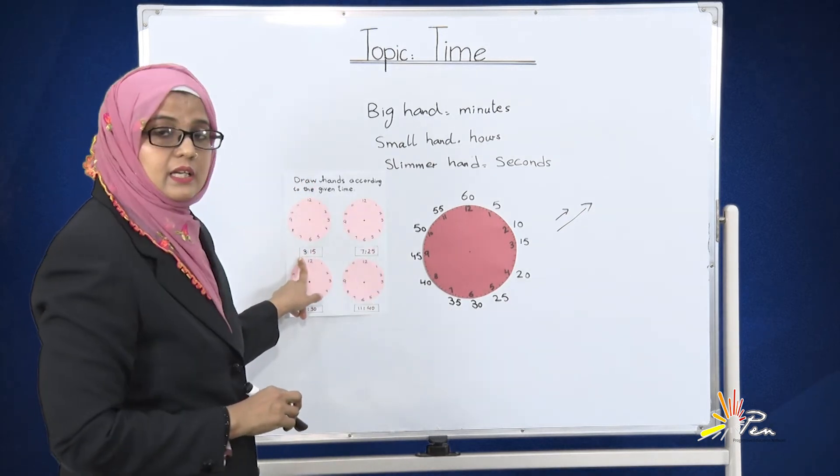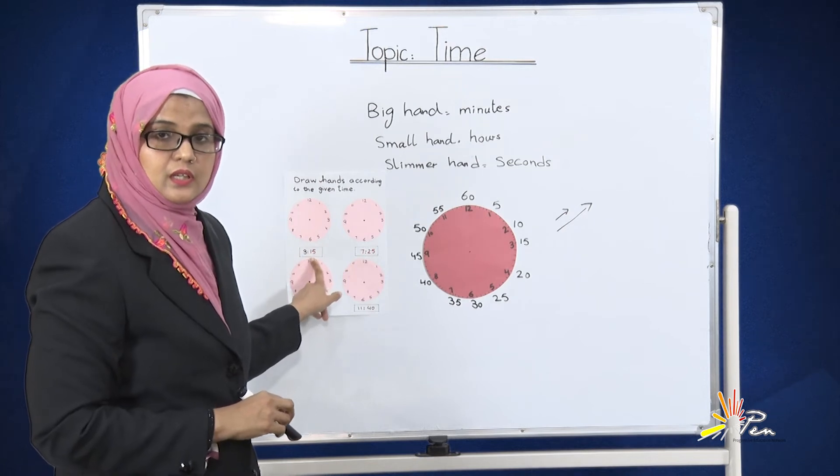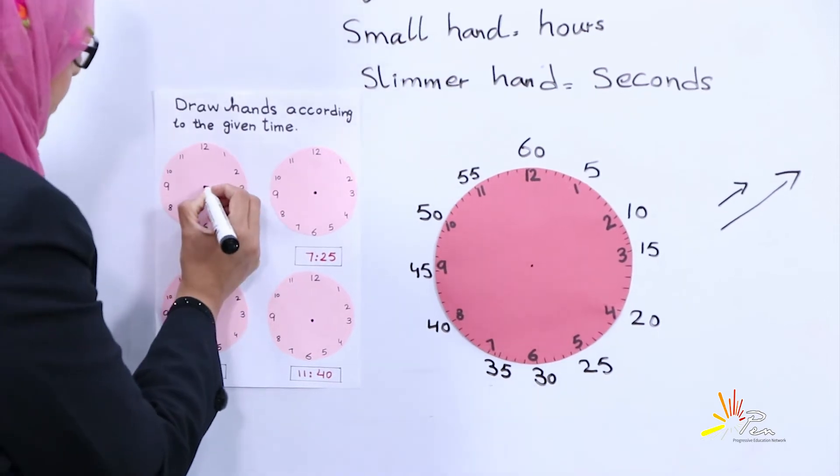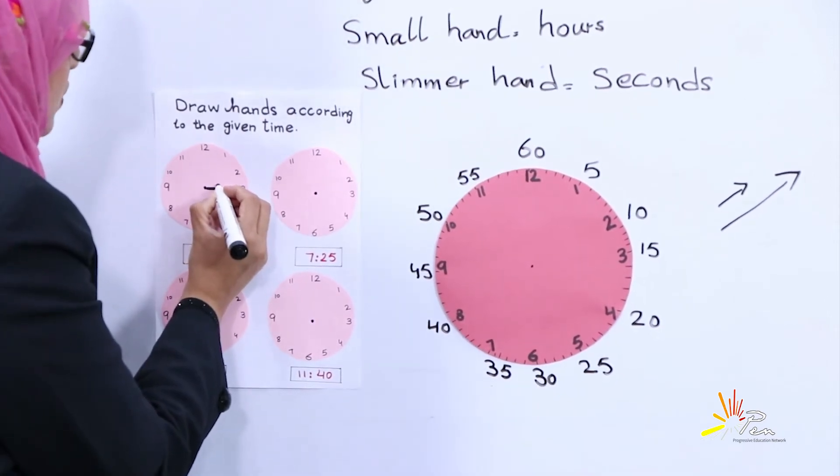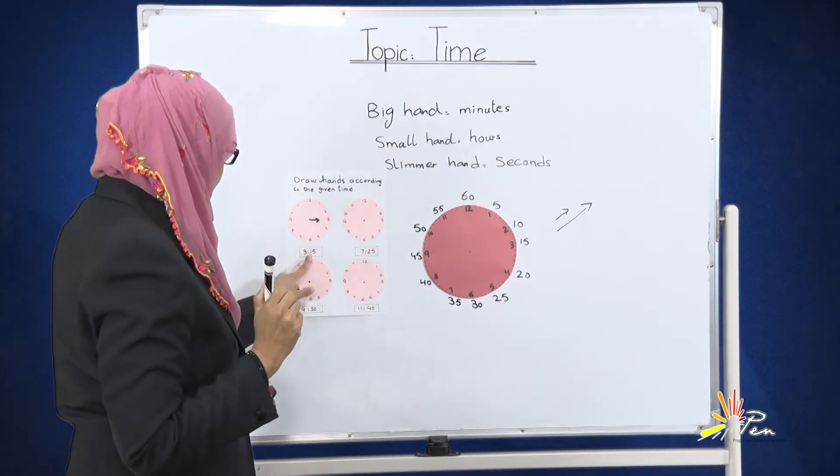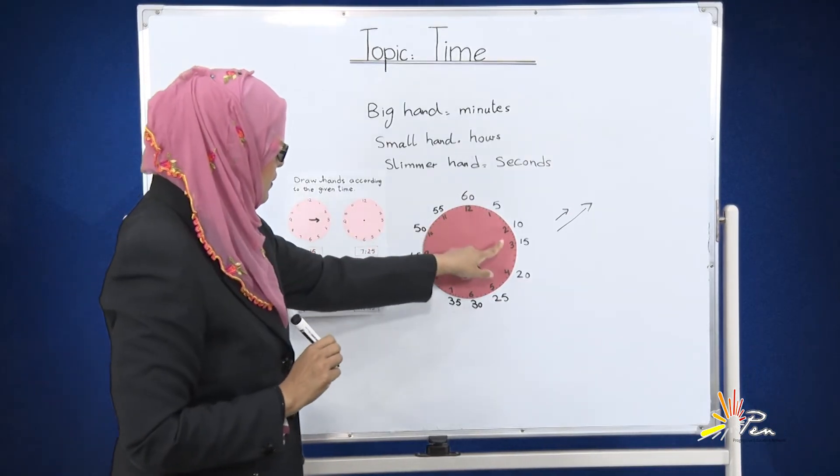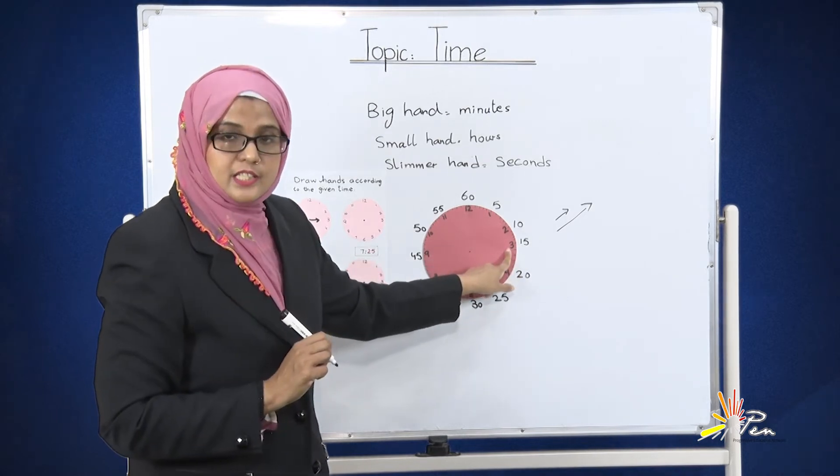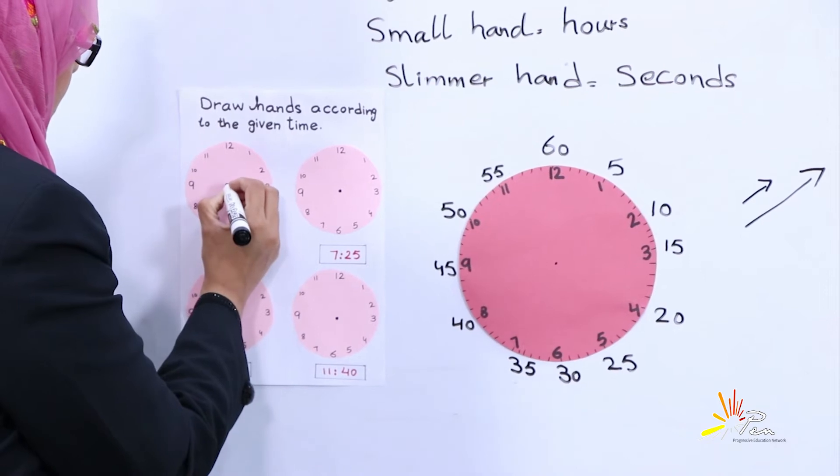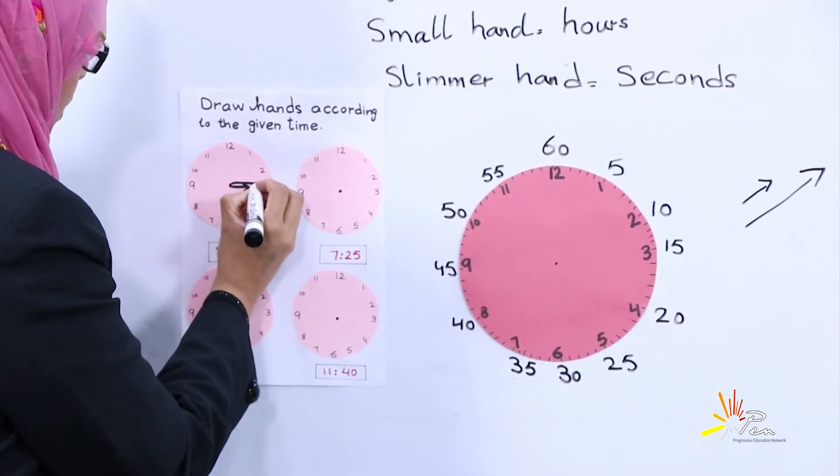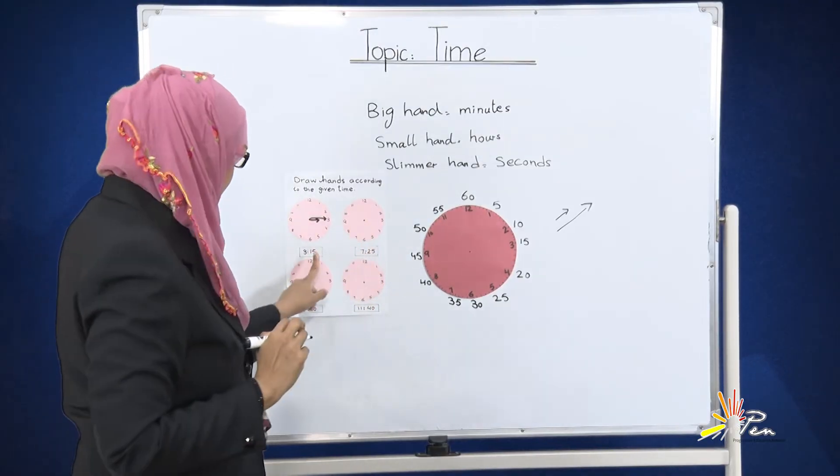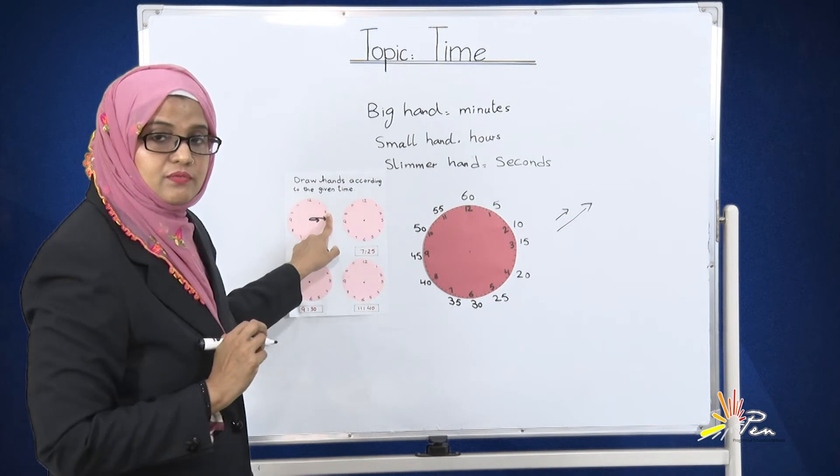Here the time is 3:15. 3 tells us about hours. We will draw a smaller hand on the number 3. And how many minutes? 15 minutes. On which number? 3. So we will also draw a bigger hand on the number 3. The time is 3:15.